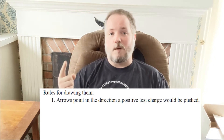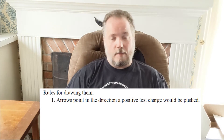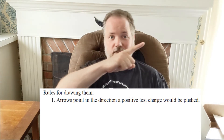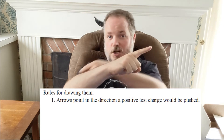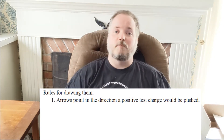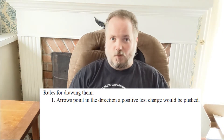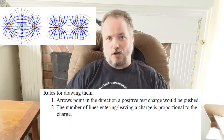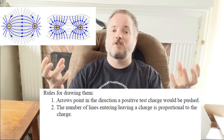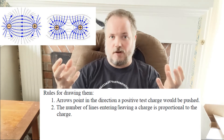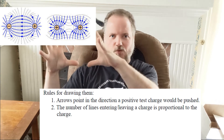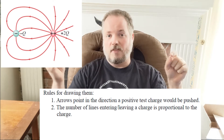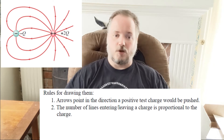Rule number one: these lines represent vectors, so they must have an arrowhead pointing in the direction a positive charge would be pushed. If a field line points one way and you drop an electron there, the electron goes the other way. Rule number two: the number of lines entering or leaving a charge must be proportional to that charge. Equal charges have the same number of lines; a charge twice as large has twice as many lines.